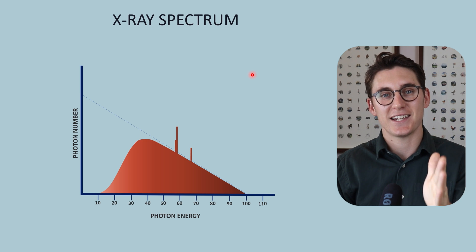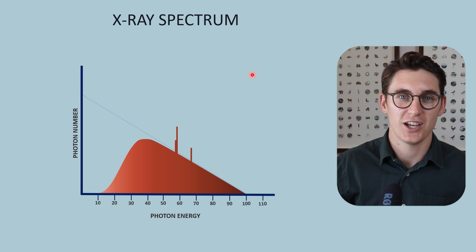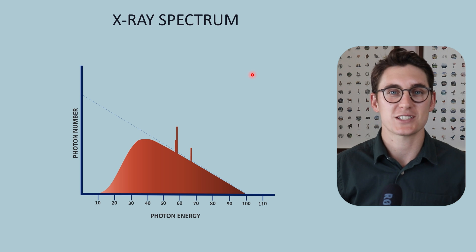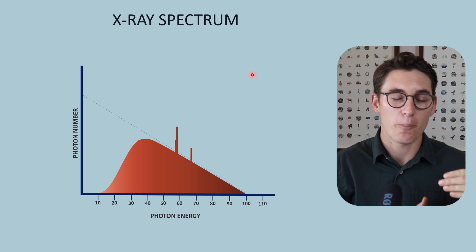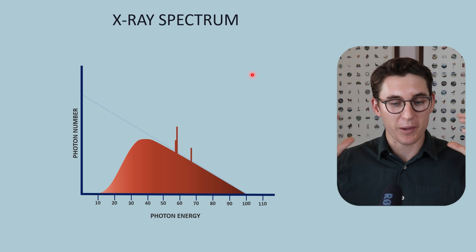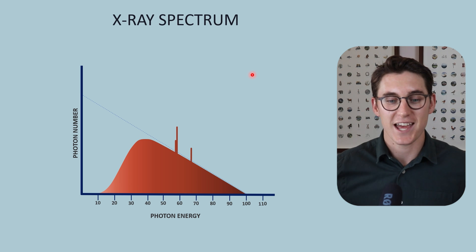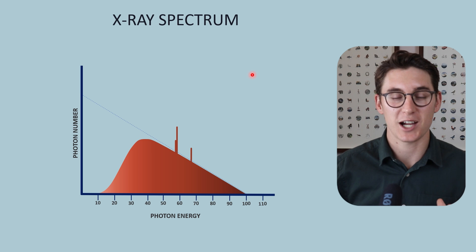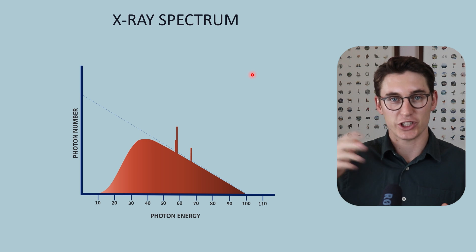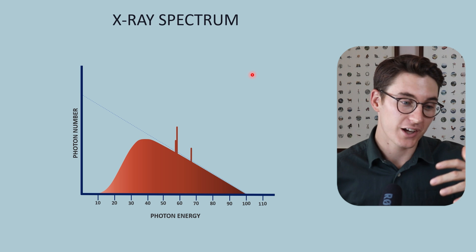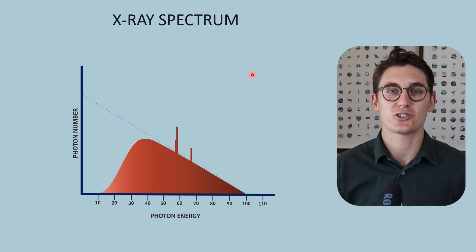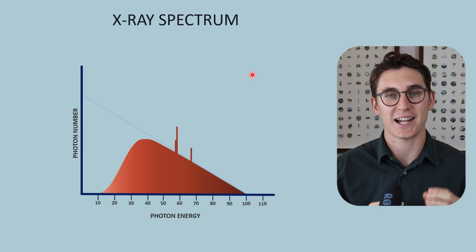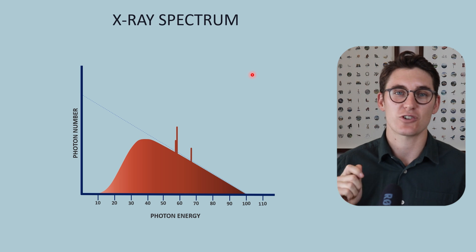We can't create an x-ray beam that has one specific energy. When we look at the penetrability of an x-ray and how x-rays interact with matter, we make the false assumption that we are dealing with a monoenergetic x-ray beam — but we are always dealing with a heterogeneous x-ray spectrum containing multiple different energies. In the coming talks, I'm going to show you how changing the kVp, our generator waveform, our current and exposure time, our filtration, and our target material will all change this x-ray spectrum.